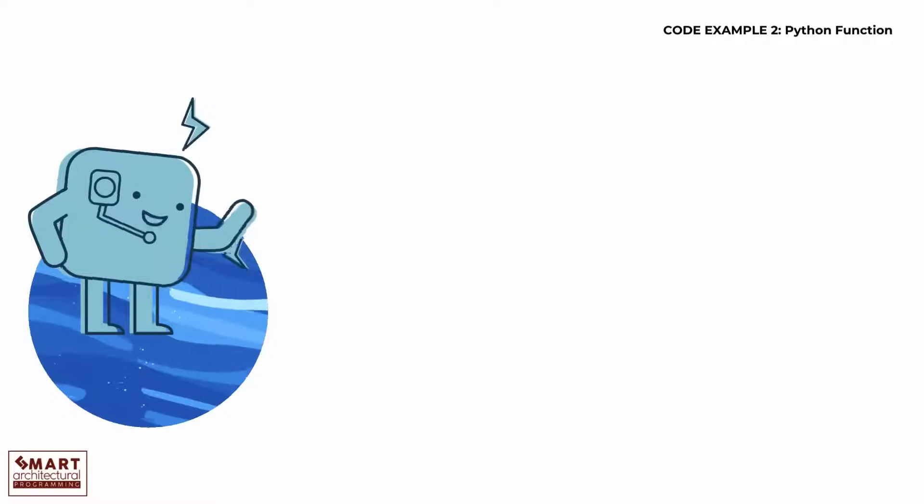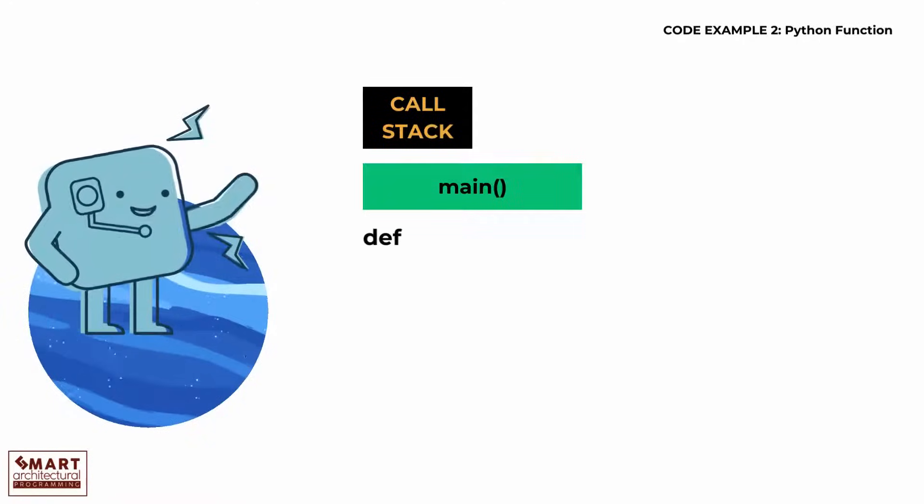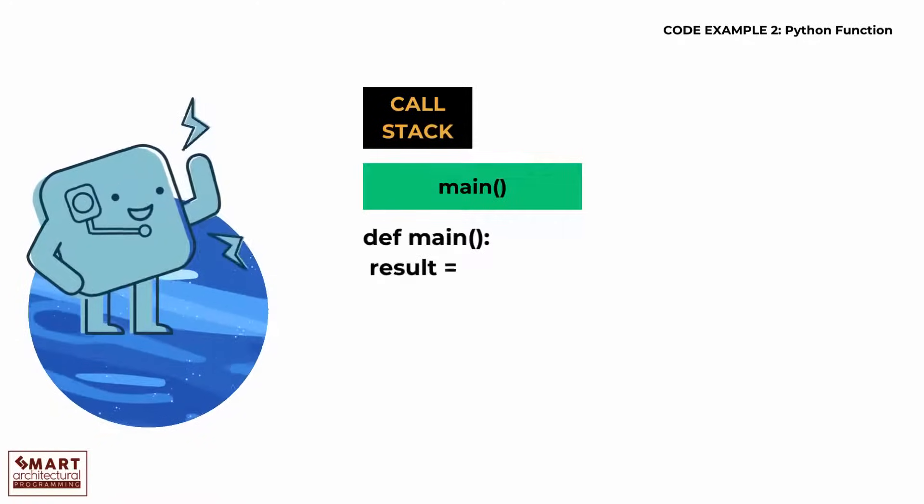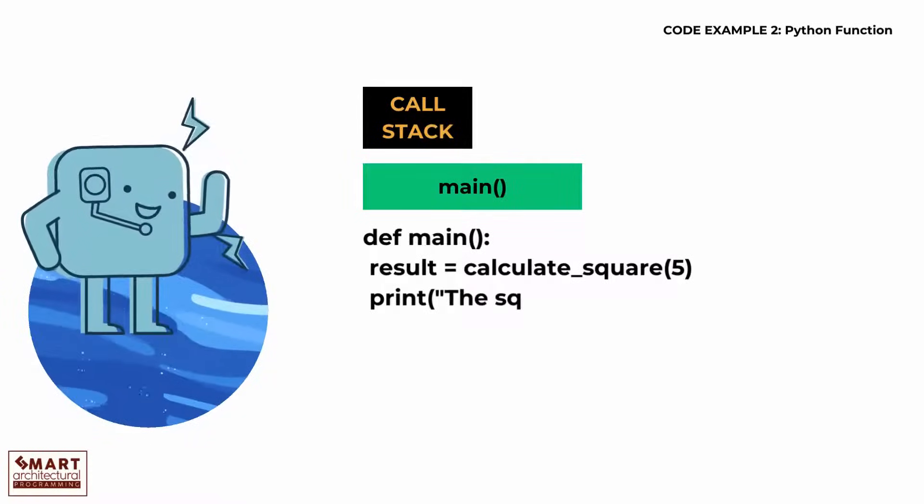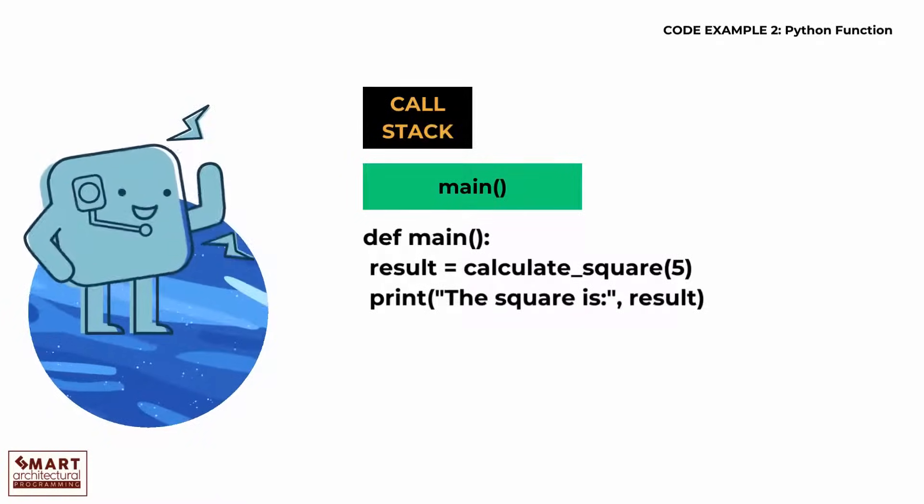Code example 2: Python function. def main(): result = calculate_square(5), print 'The square is:', result. The main function calls calculate_square(5), receives the result, and prints it.